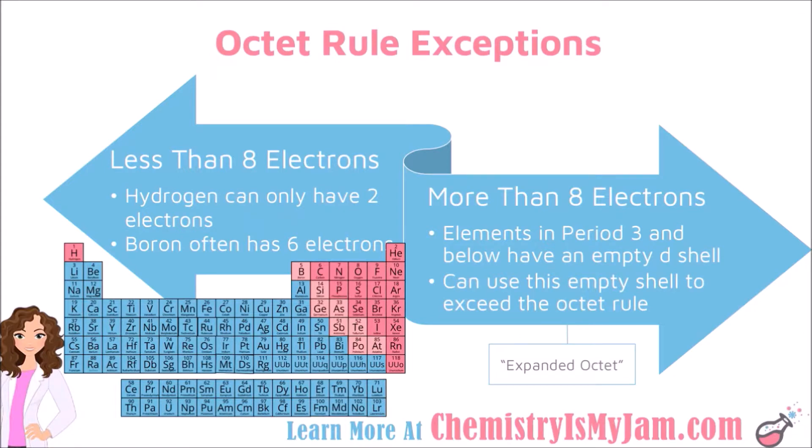Remember when we did electron configuration and we called this row the 3s. This was the 3p. Here was the 4s. And then this was the 3d. That energy level dropped by 1. So, the elements in period 3 or below have an empty D subshell that they can use. We call this an expanded octet. It allows those elements to handle having more than 8 electrons.